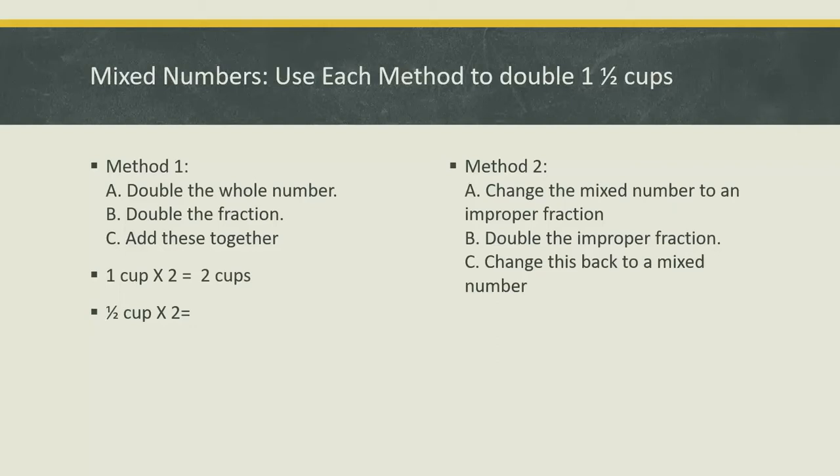You may remember what one half doubled is, or you can write it out as a multiplication. One half times two over one, that gives us two over two, or one. So one half cup times two is one cup. Now we'll add those together. Two cups plus one cup equals three cups.